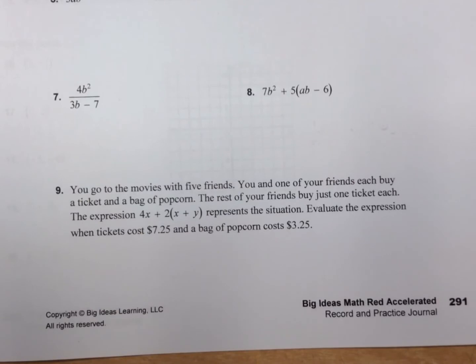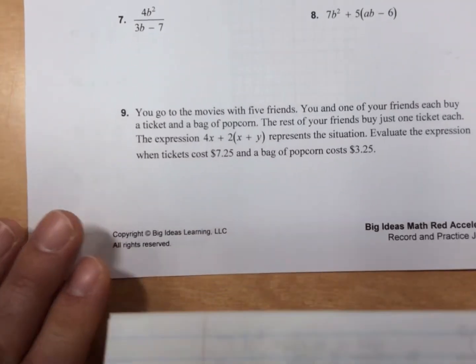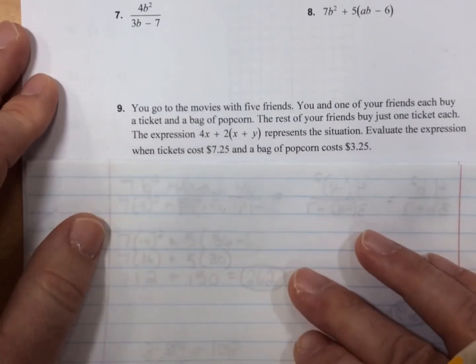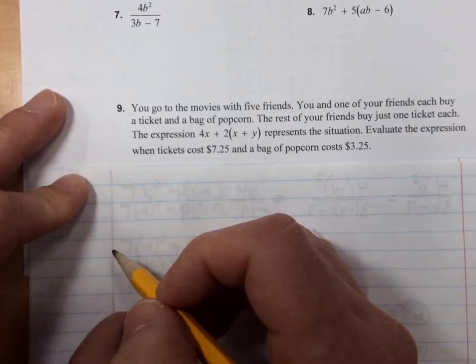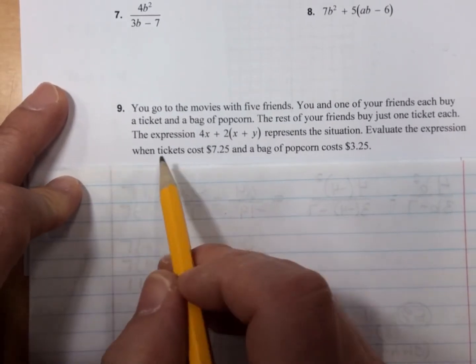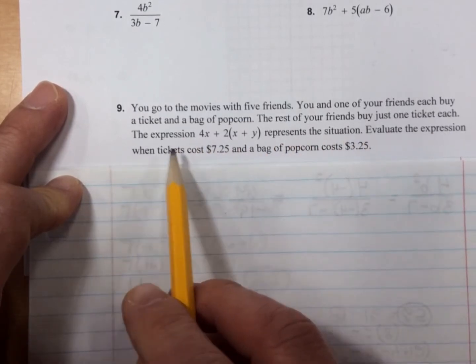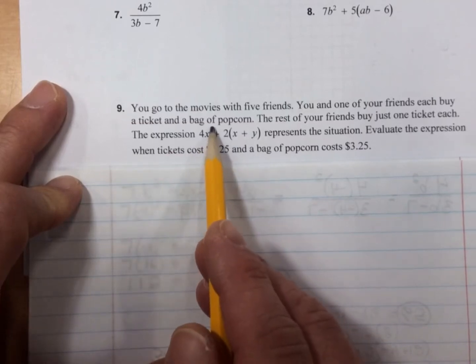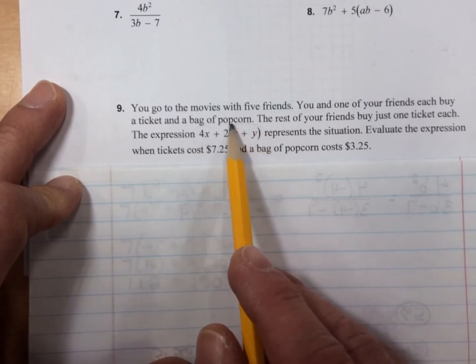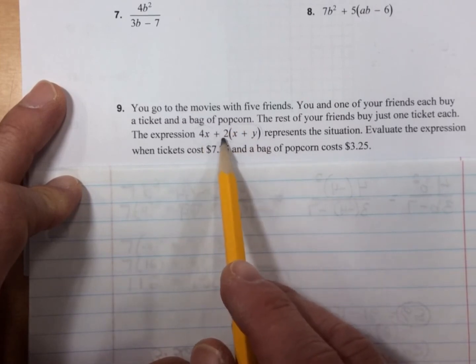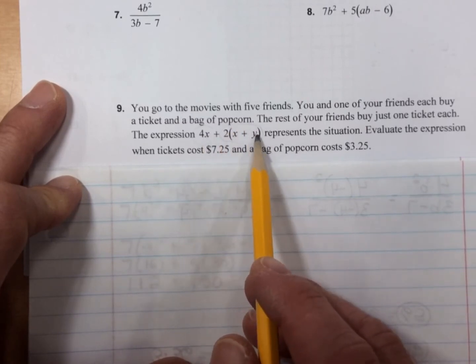The last problem on this side. It says you go to the movies with 5 friends. You and one of your friends each buy a ticket and a bag of popcorn. The rest of your friends just buy a ticket. The expression 4x + 2(x + y) represents the situation. Here are your 4 friends. X is the ticket. Here are you and the friend that bought the popcorn.